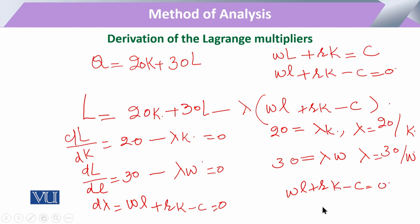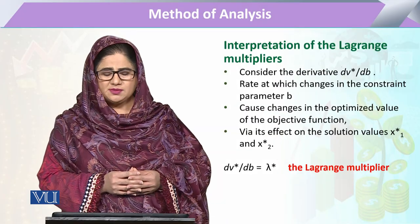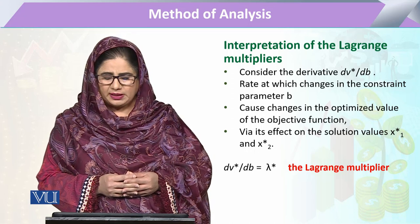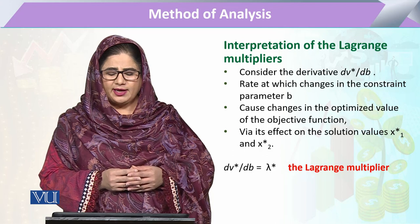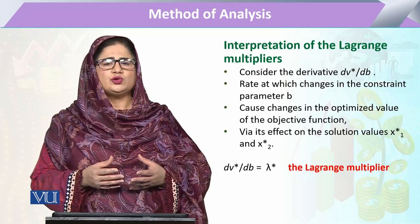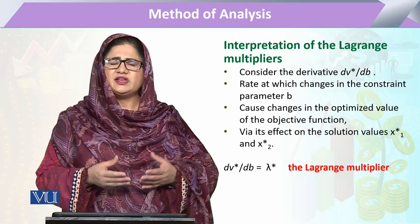From here we can take the value of K as 20/λ, or equate these values in the constraint equation and solve. Basically, the Lagrange multiplier gives us the rate of change in the dependent variable with respect to the explanatory variable. The Lagrange multiplier is the derivative of the optimal value with respect to the constraint parameter b — in other words, it is the rate at which changes in constraint parameter b affect the optimal solution.